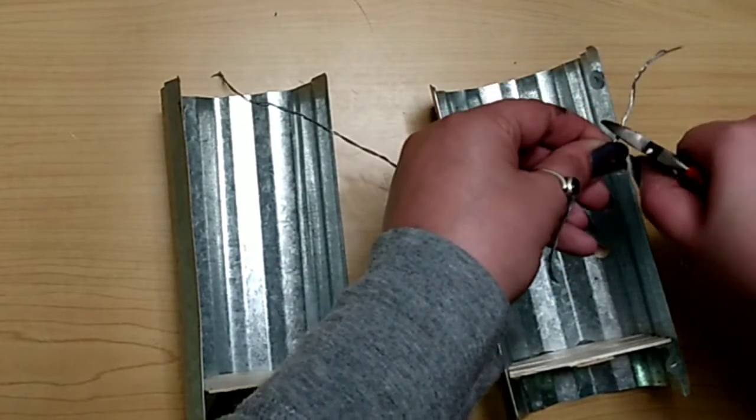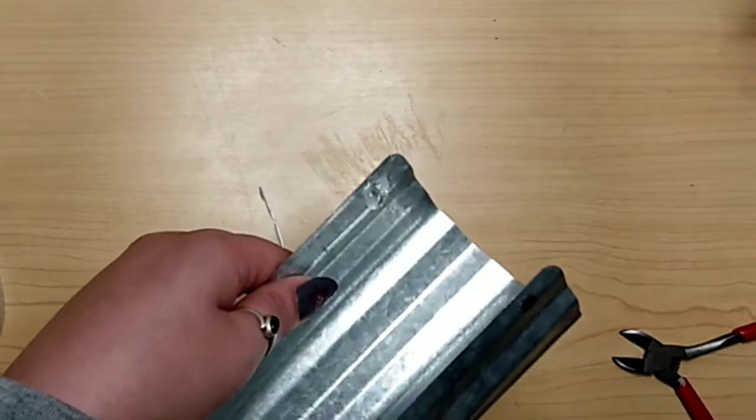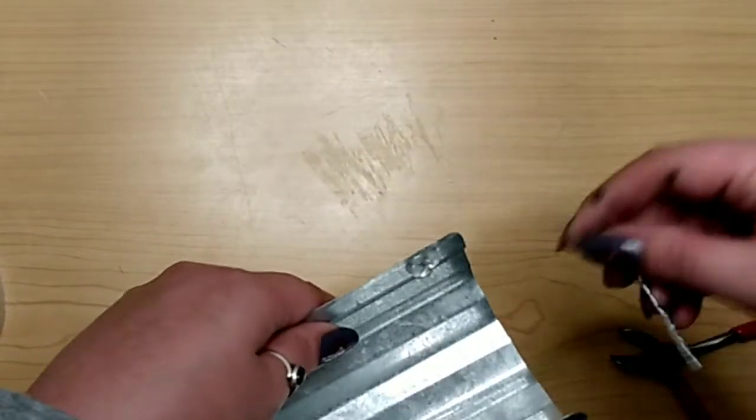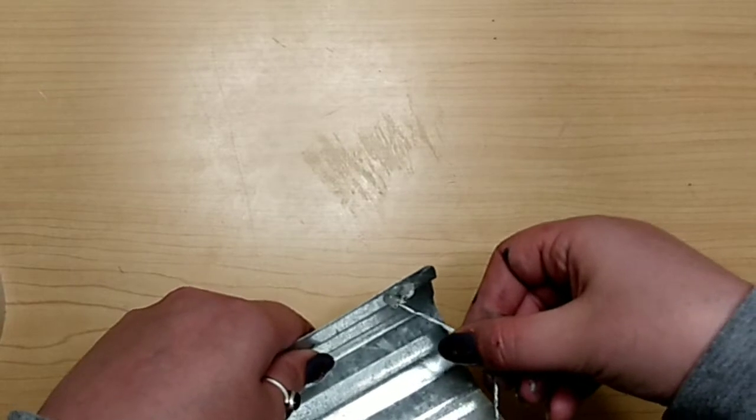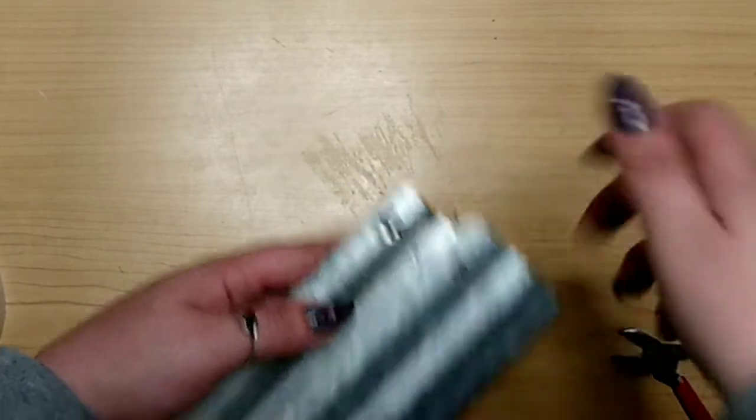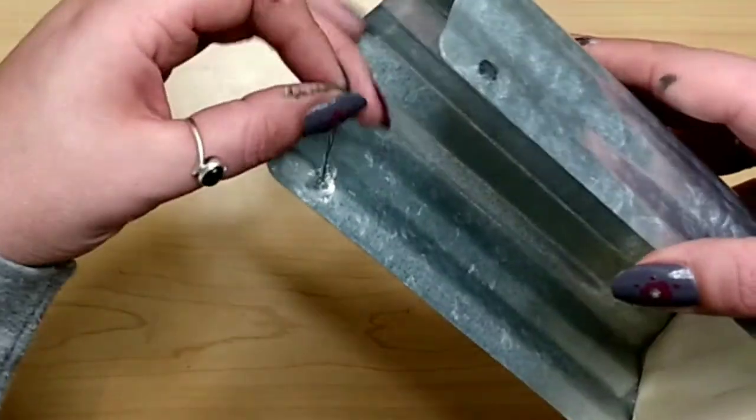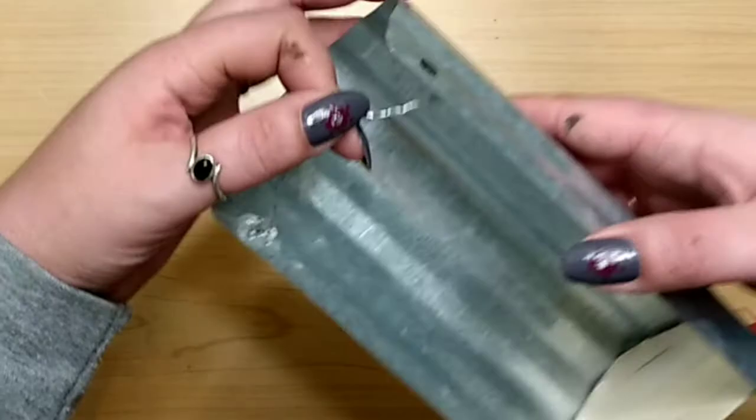And then we're just going to trim off any excess we don't need. This needs to fit just inside of this vase cylinder piece. We're going to put a dollop of hot glue right on that hot glue that we used to cover the hole. Hold this wire piece in place in that hot glue until the hot glue dries and then repeat that with the other side.